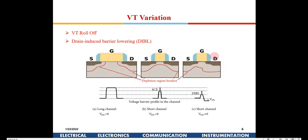The second effect is Drain Induced Barrier Lowering (DIBL). When a higher potential is applied to the drain of an NMOS, a depletion layer forms that helps reduce VT — because the drain voltage is doing part of the work that the gate voltage would normally do to create a depletion and attract electrons. The first effect is VT roll-off and the second is DIBL. Exact analytical treatment will be covered in the PMMD course; here we just need the basic understanding.